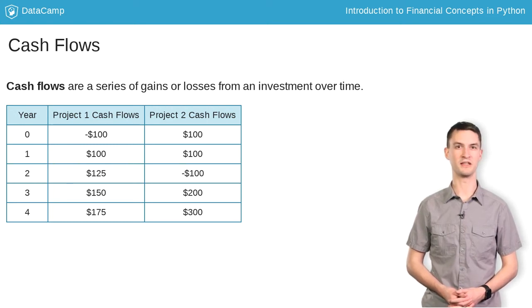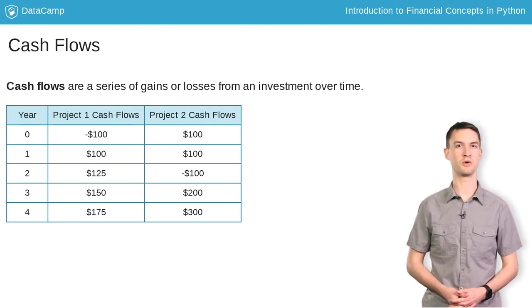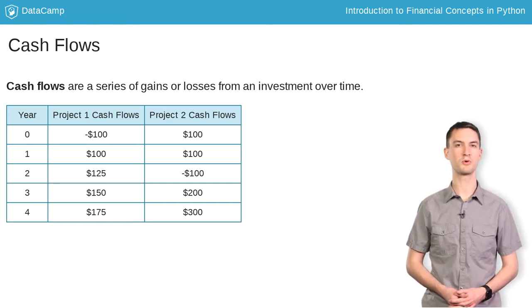Project 2 generates $100 immediately and in year 1 as well, then requires a net $100 investment in year 2, finally generating $200 and $300 in years 3 and 4 respectively. Which project is better?